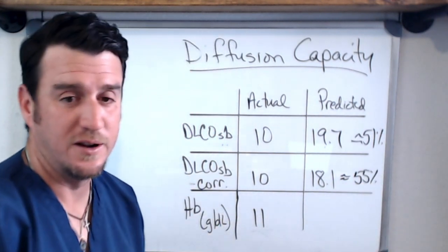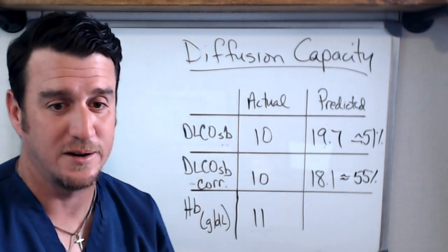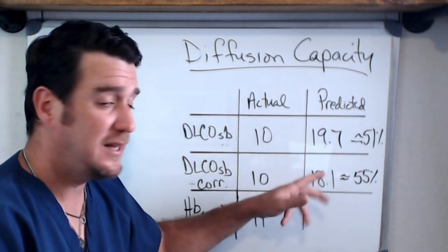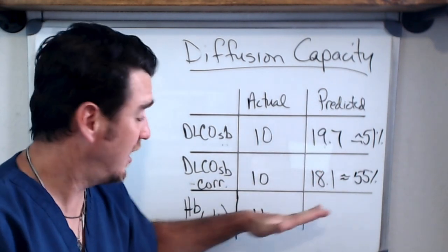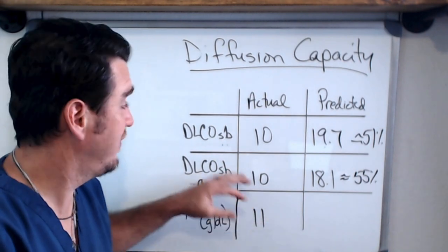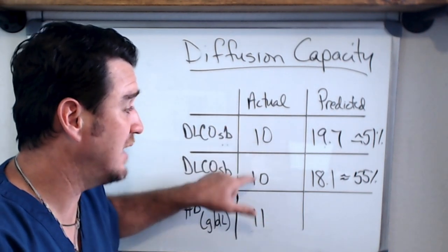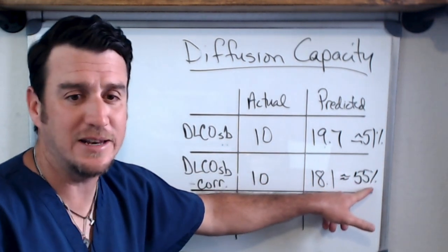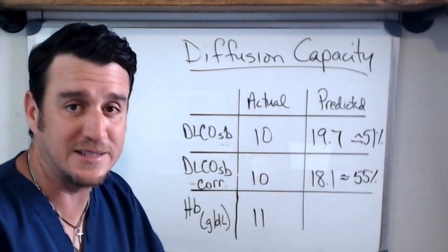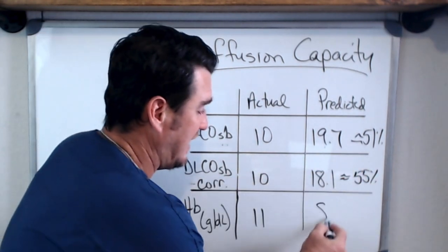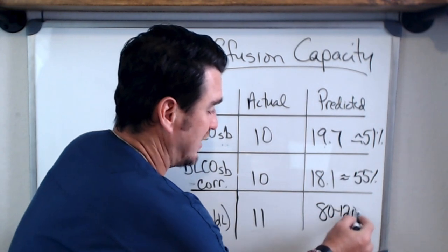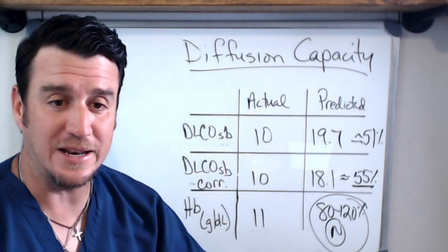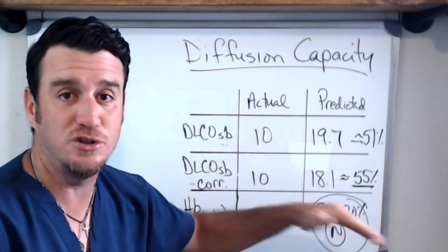Now this may be confusing right here, but think about this. They have a lower predicted diffusing capacity because of their lower hemoglobin, but because of the actual volumes that were measured, their percentage is actually higher. Now in this case it's not enough to make it normal, this is obviously abnormal. Remember I told you 80 to 120 equals normal and we're at 55 percent. But my point is that this is going to be the value that you use.